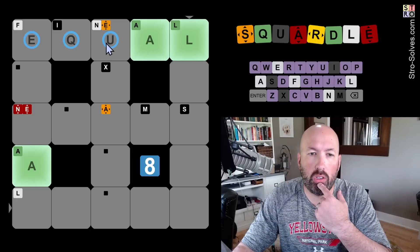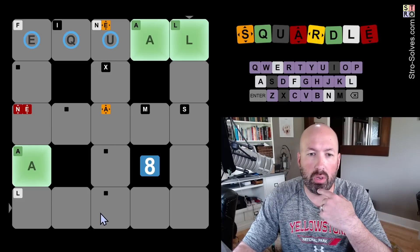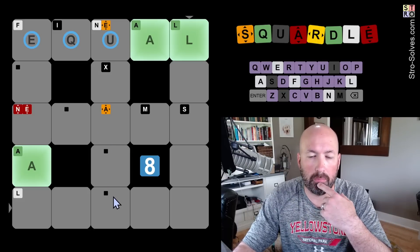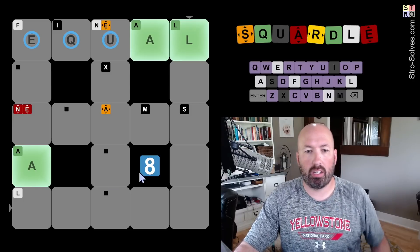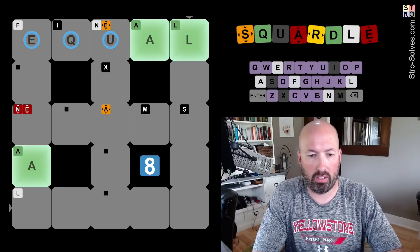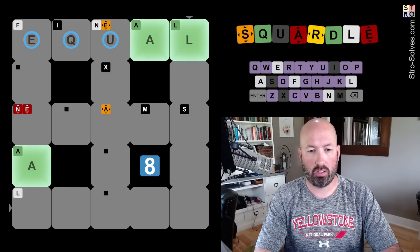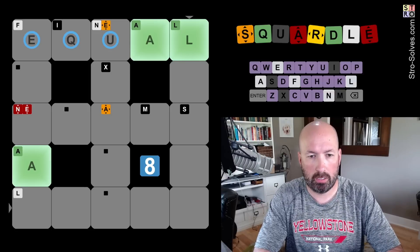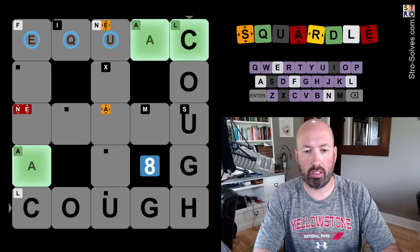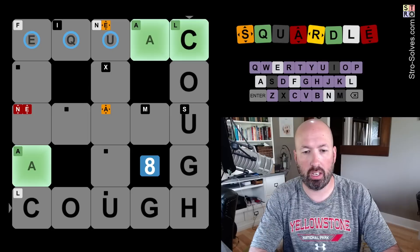Now, interesting, we do have an A in the middle row and column as well. If that is a U, this is going to have an E, U, and A in this middle column. Hmm, not sure on that. Let's discuss another thing with some letters we haven't used yet. We could do something like DOUBT or... No, let's do COUGH. I think COUGH is better. I like the C and the GH better.